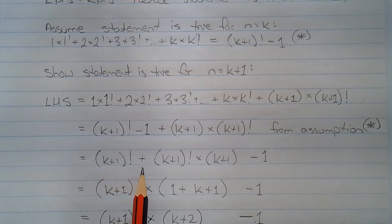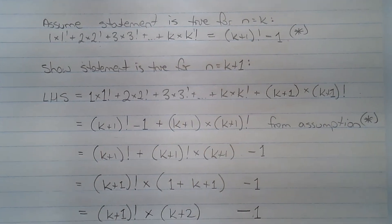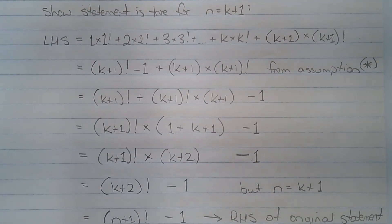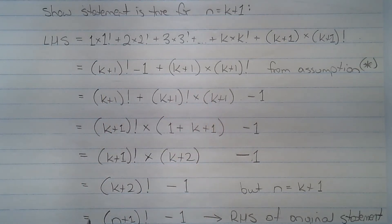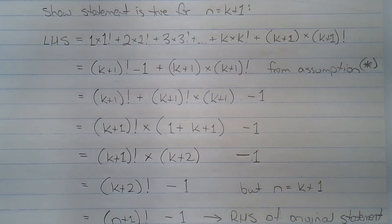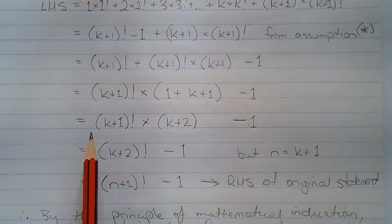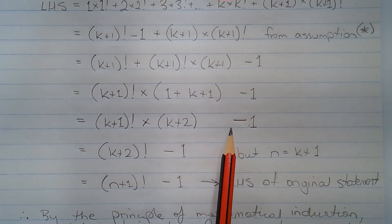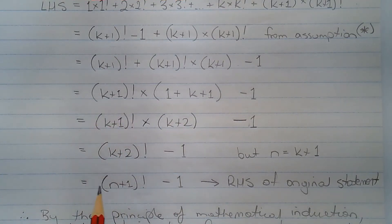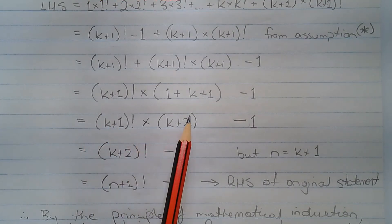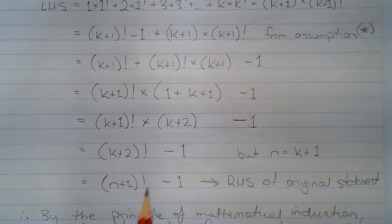That equals k plus 1 factorial plus k plus 1 factorial multiplied by k plus 1 minus 1. We can factorize out k plus 1 factorial, giving k plus 1 factorial multiplied by 1 plus k plus 1 minus 1, which equals k plus 1 factorial multiplied by k plus 2 minus 1. Note that k plus 1 factorial multiplied by k plus 2 can be written as k plus 2 factorial, so the expression simplifies to k plus 2 factorial minus 1.